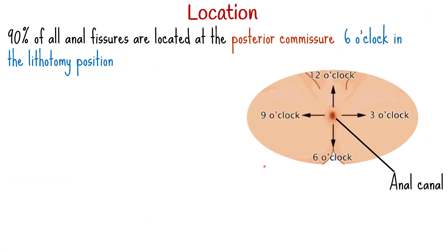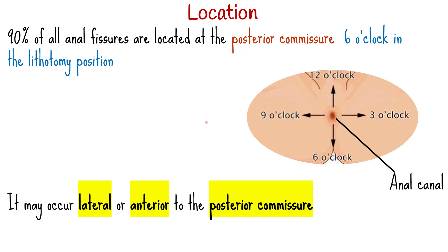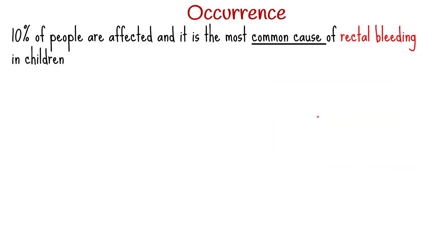90% of all anal fissures are located at the posterior commissure, which is 6 o'clock in the lithotomy position. It may occur lateral or anterior to the posterior commissure. Approximately 10% of people are affected in their lifetime, and it is the most common cause of rectal bleeding in babies and children.